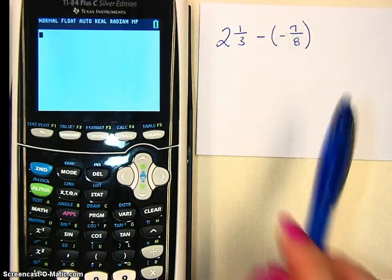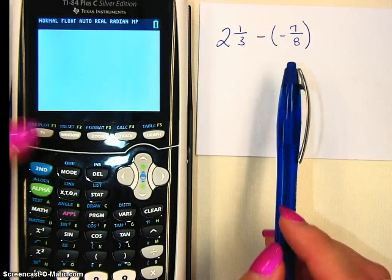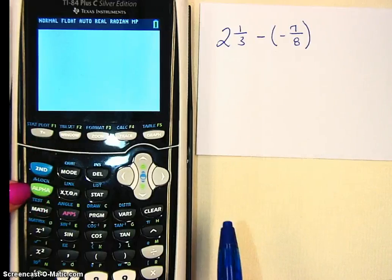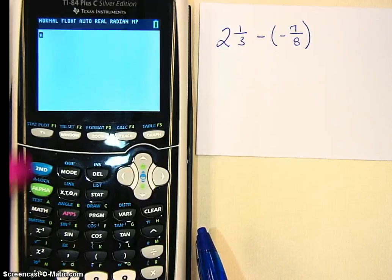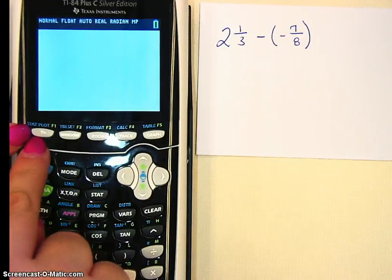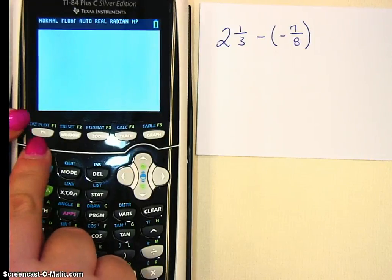The first thing we need to know is how to put these in. You're looking for the alpha button. It's a green button near the top, under the second button. You want to push alpha and then y equals. Y equals is at the very top, the very topmost button on the left.